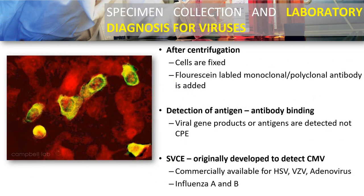After incubation, cells are fixed and fluorescein-labeled monoclonal or polyclonal antibodies are added. Detection of antigen-antibody binding and viral gene products or antigens is detected by CPE. A positive result shows green fluorescence. SVCE was originally developed to detect cytomegalovirus, the causative agent of mononucleosis. It is commercially available for herpes simplex virus, varicella-zoster virus, and adenoviruses, and can also be used to speed up isolation of influenza A and B.